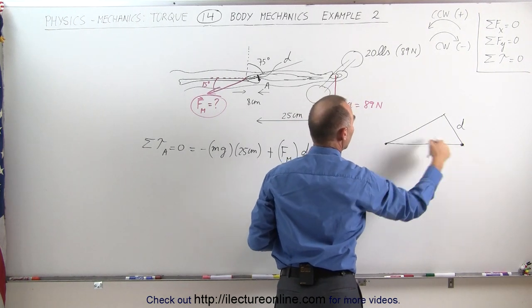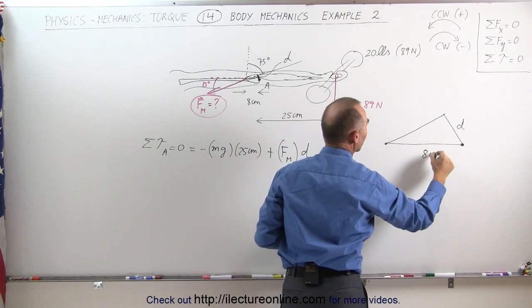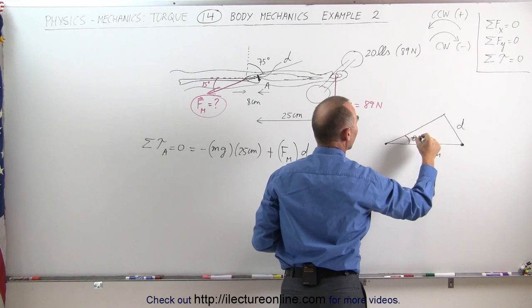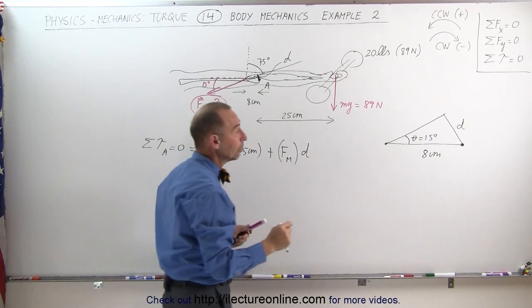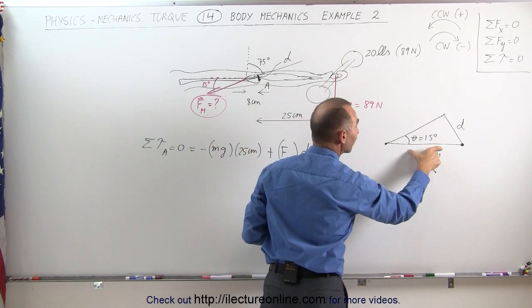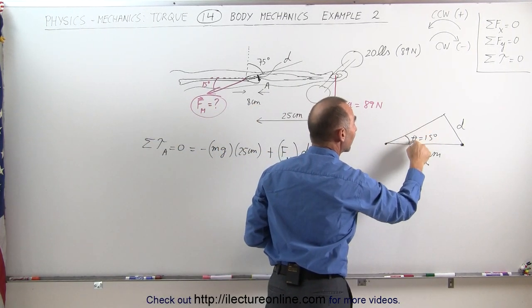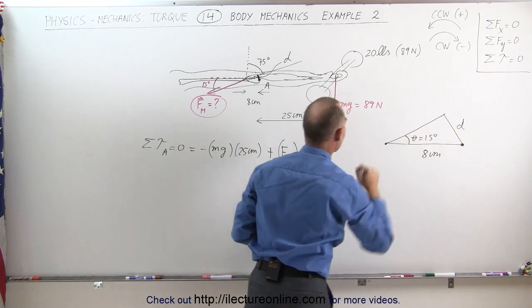This distance from the pivot point to where the muscle is attached is 8 centimeters, and this angle - let's call it theta - equals 15 degrees. This shows that D equals the hypotenuse, 8 centimeters, times the sine of theta, because D is opposite to the angle.